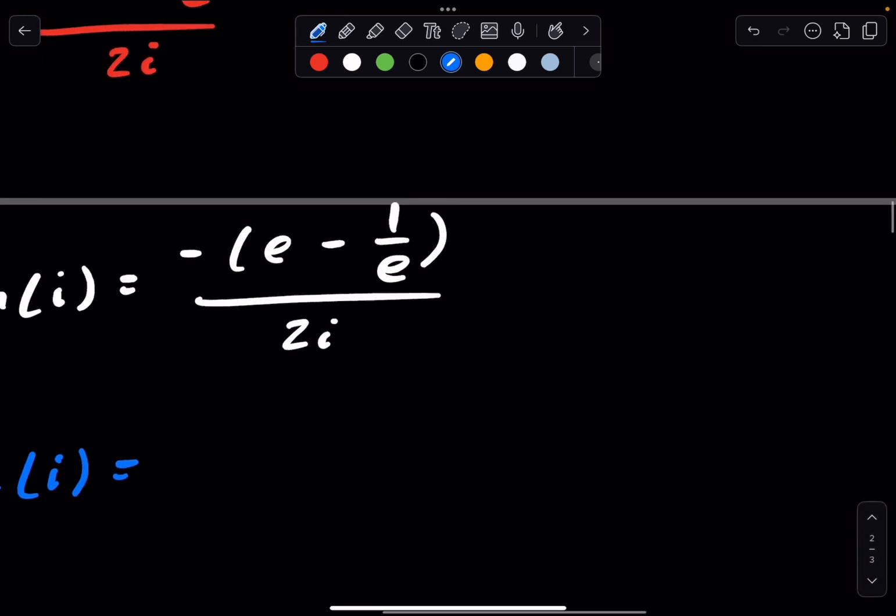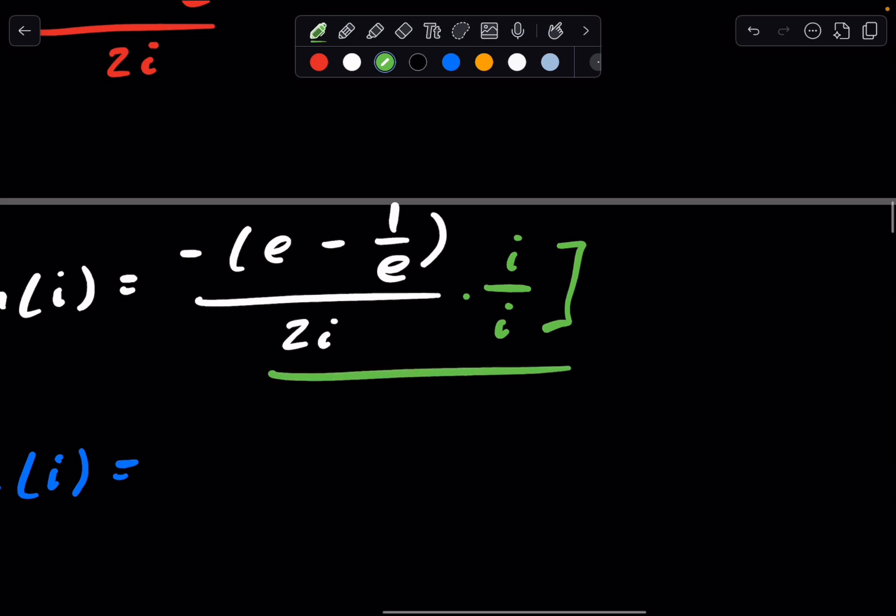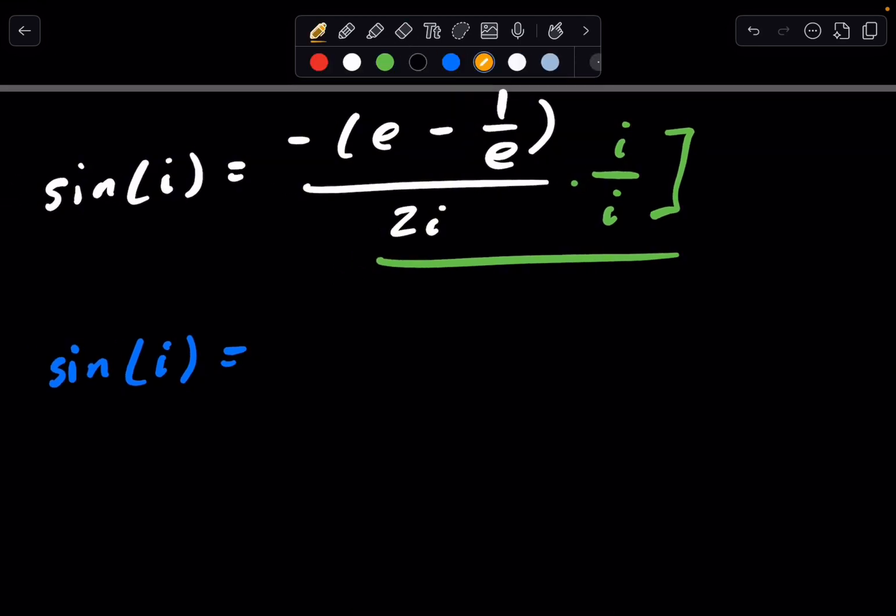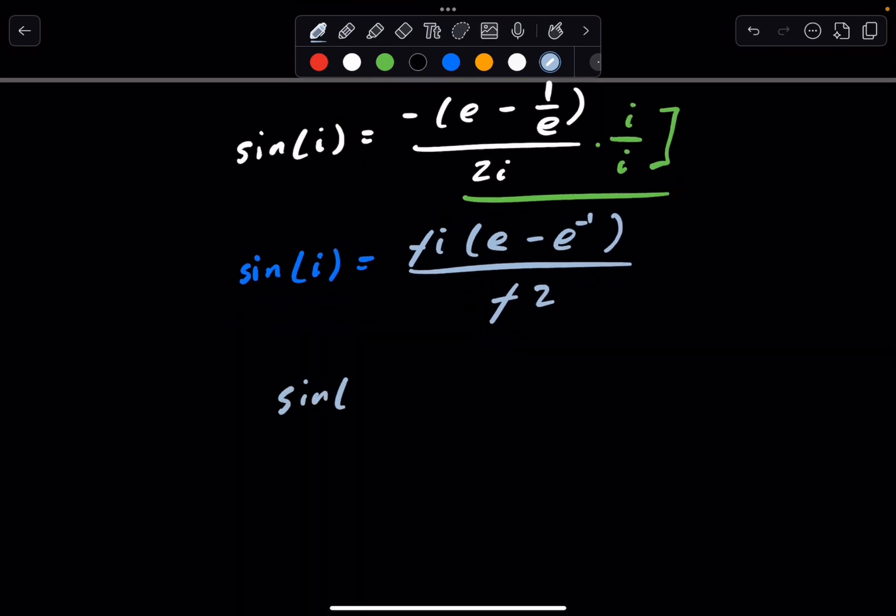We have sine of i is equal to, now let's take a look here. You don't really like having an i in the denominator. It's not really good practice. So what we commonly do in mathematics is we just multiply by i over i. i over i is one. There's no disagreement there. And that allows us to eliminate that i in the denominator. So we get sine of i is equal to negative i times (e - e^(-1)). And on the bottom, we get 2i squared, and that's just negative two. So we see the negative negative cancels quite nicely. We have sine of i is equal to i times (e - e^(-1)) / 2.